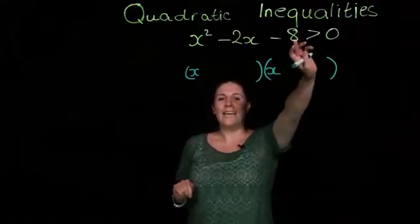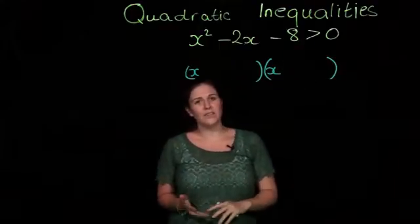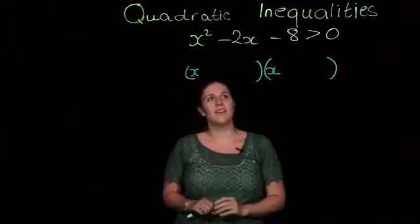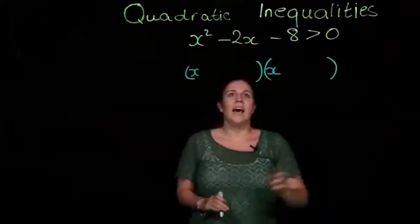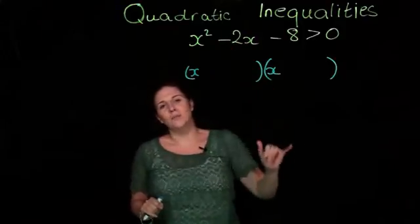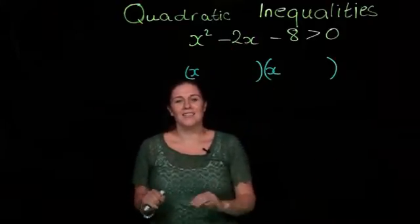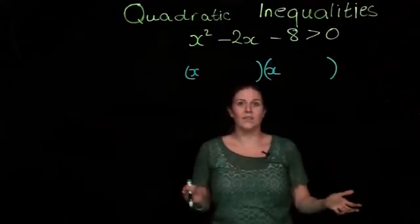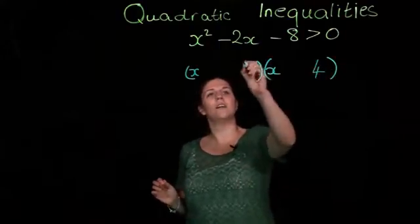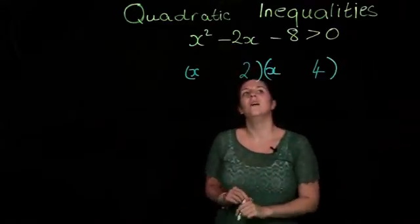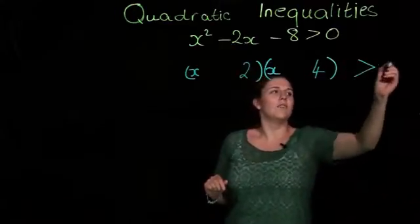We have an 8 on the end, so we're going to use the factors of 8. It's either going to be 2 and 4, or 8 and 1. We want to end up with a 2 in the middle, so the ones most likely are 4 and 2. We'll put 4 here, 2 here. Remember, this is all greater than 0.